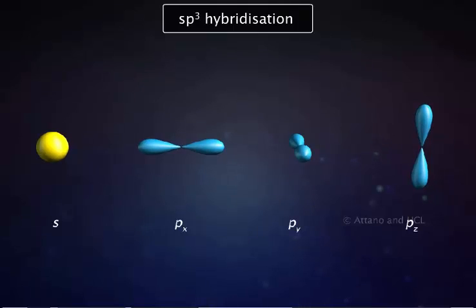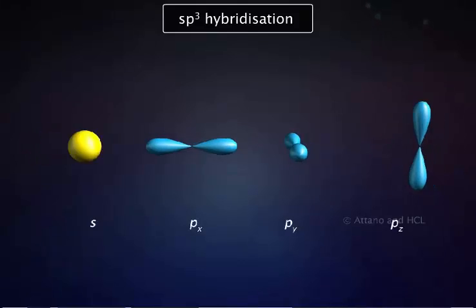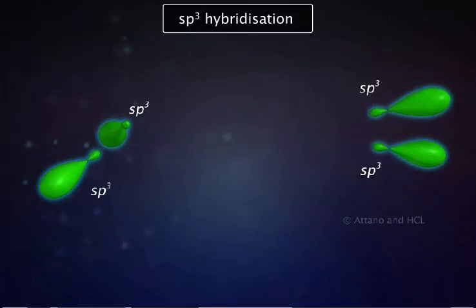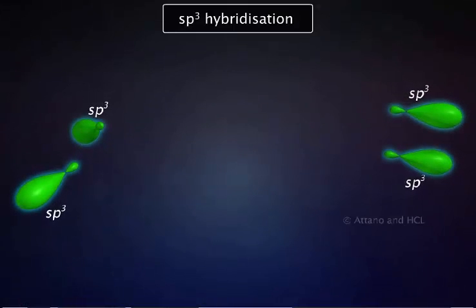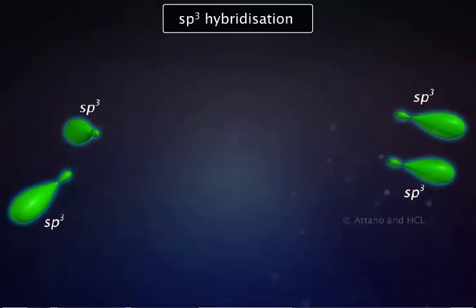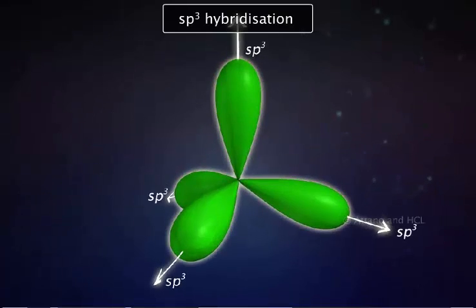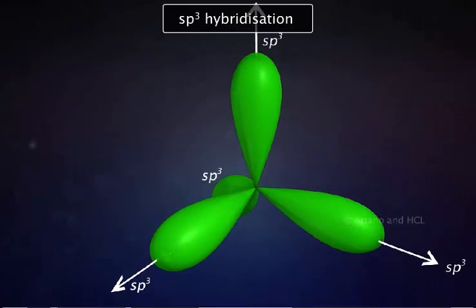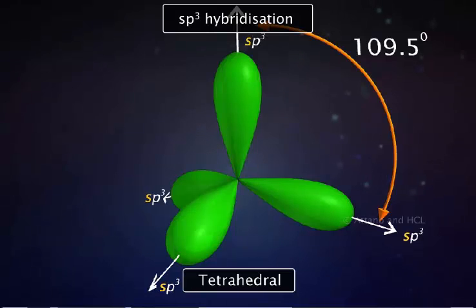This type of hybridization involves the mixing of 1s and 3p orbitals, resulting in the formation of four equivalent sp3 hybrid orbitals. Note that the number of hybrid orbitals equals the number of atomic orbitals that have hybridized. The set of four sp3 hybrid orbitals has a tetrahedral geometry. The angle between sp3 hybrid orbitals is 109.5 degrees. Each sp3 hybrid orbital has 25% s character and 75% p character.